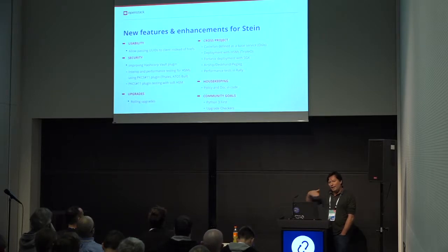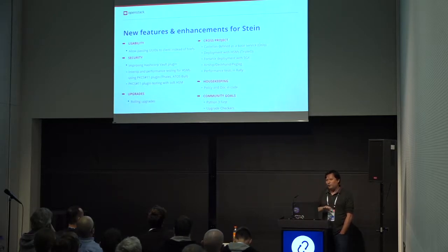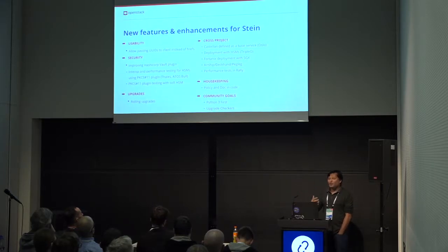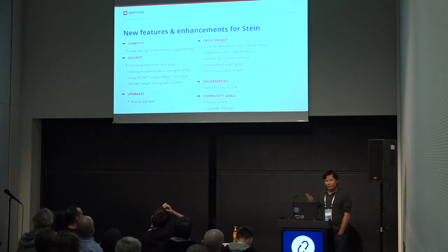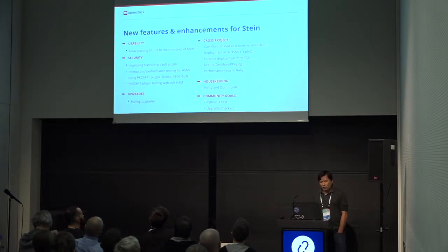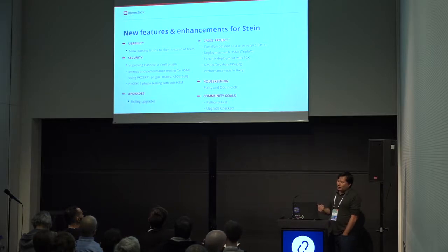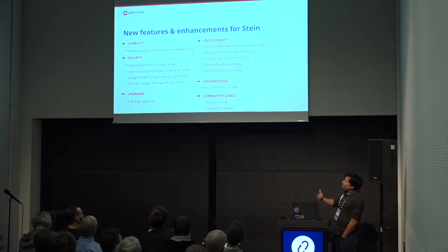On the security side, behind the front-end REST API, there are various back-end plugins. The simplest is 'simple crypto,' which is just a key in a file used to encrypt things. You can also talk to HSMs and to Vault. There have been improvements there, and there will be further improvements to the HashiCorp Vault plugin to make it more production ready.